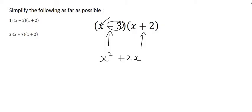Now we need to look at this minus 3, which needs to multiply with that x, and it needs to multiply with that plus 2. So minus 3 times x is minus 3x, and minus 3 times positive 2 is minus 6.